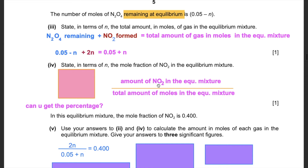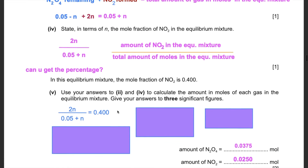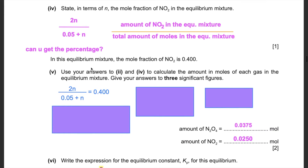The mole fraction of NO₂ in the equilibrium mixture is the amount of NO₂ divided by the total moles. If they asked for a percentage you'd multiply by 100, but here they want the mole fraction, so no multiplication by 100. Substituting our expressions: mole fraction of NO₂ = 2n / (0.05 + n).